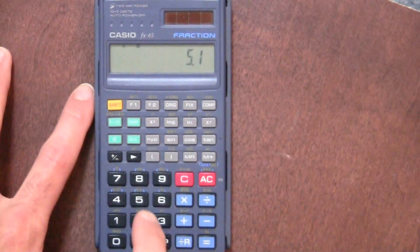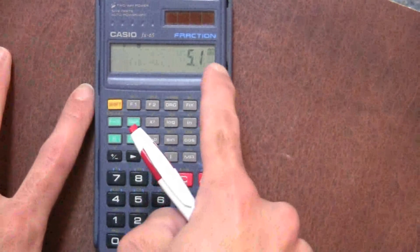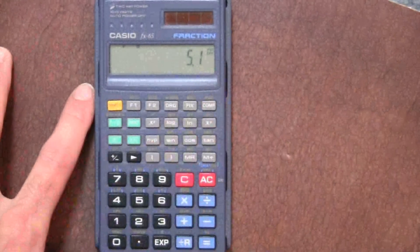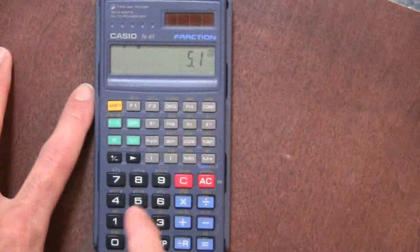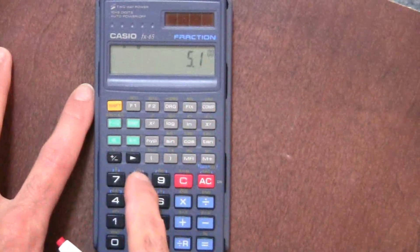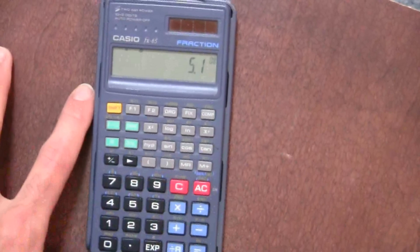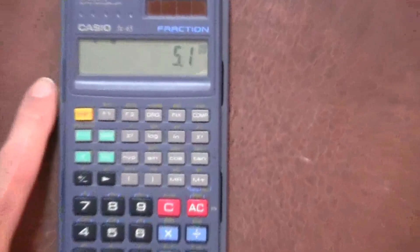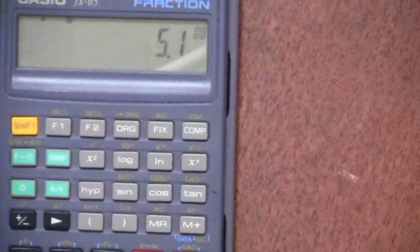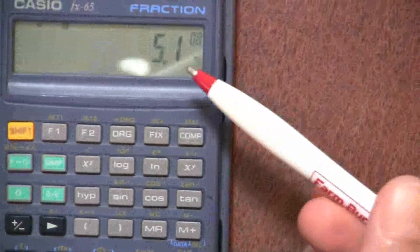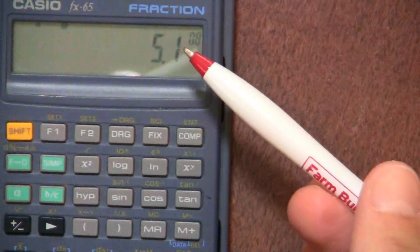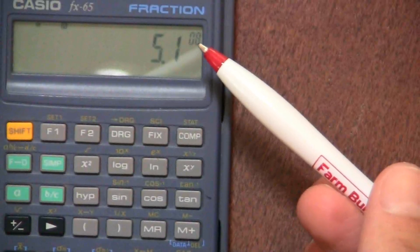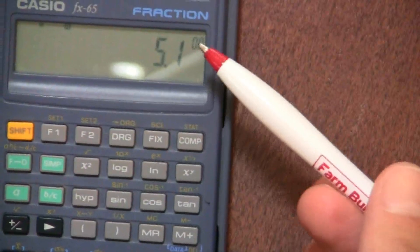And looking at that here on this calculator, it shows it as 5.1, and then it implies times 10 to the 8th. That's 08 there.